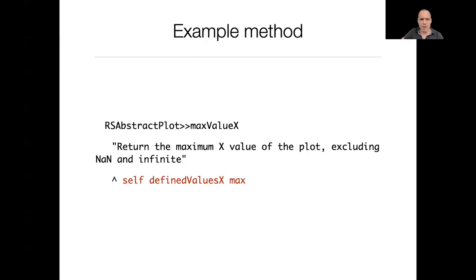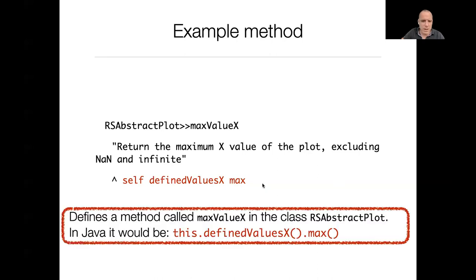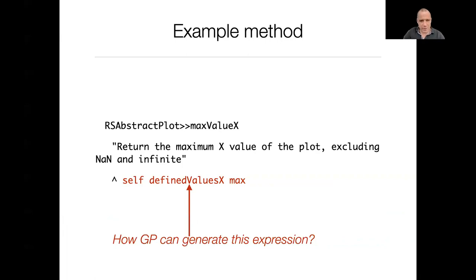Here is a short example. We have a method called 'maxValue:x' defined in the class AbstractPlot. This method has just one statement: it returns the value written by the expression 'self definedValues x max'. In Java, this would be written as 'this.definedValues(x).max()'. In Pharo, wherever there is a dot in Java, there is simply a space. The question is whether genetic programming can generate this expression.